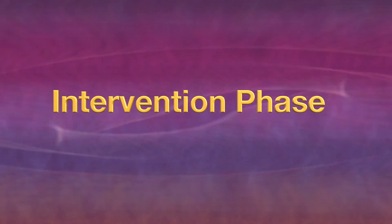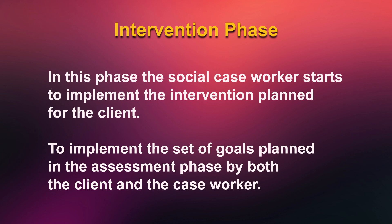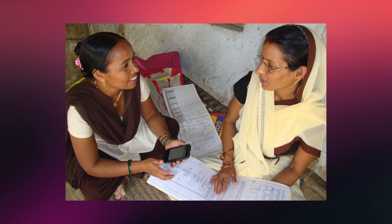Now let's move to the third phase: the intervention phase. In this phase, the social caseworker starts to implement the intervention plan for the client — that is, to implement the set of goals planned in the assessment phase by both the client and the caseworker. The intervention can be a direct method where there is a face-to-face interaction between the client and the caseworker. Counseling is one of the methods in the intervention phase. Environmental modification is another aspect, as the problem expressed by the client is connected to the environment in which the client is in.